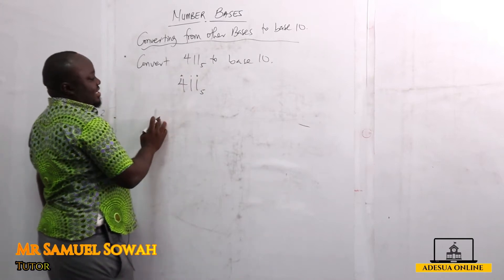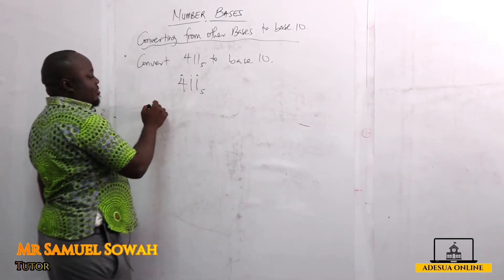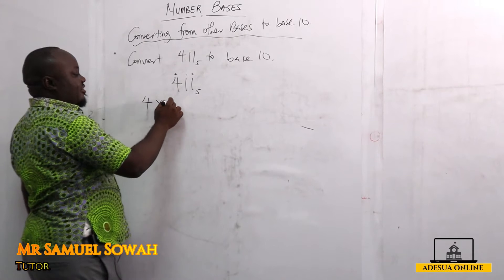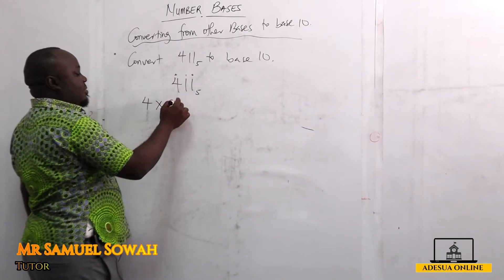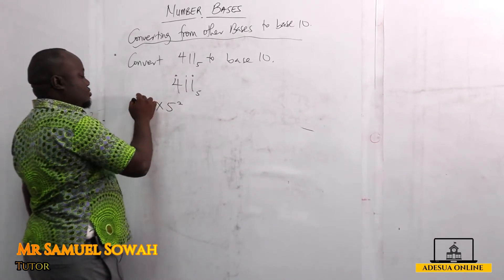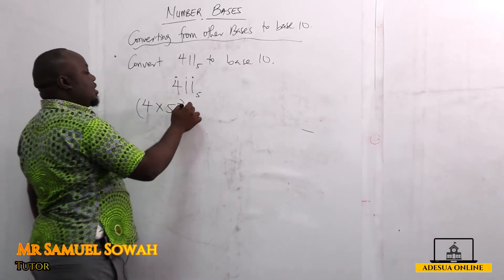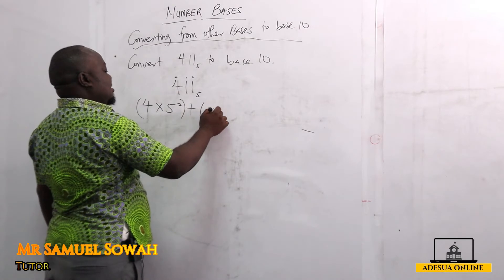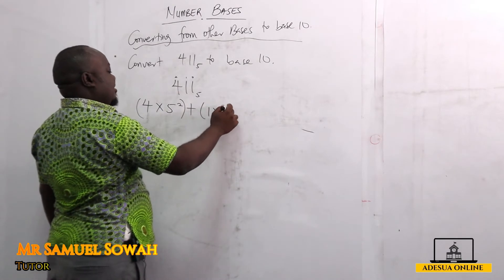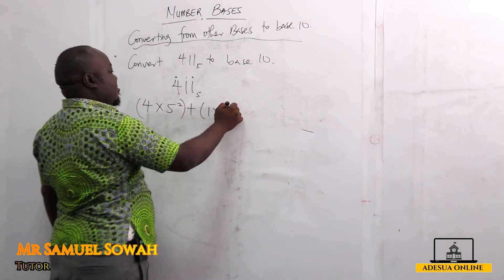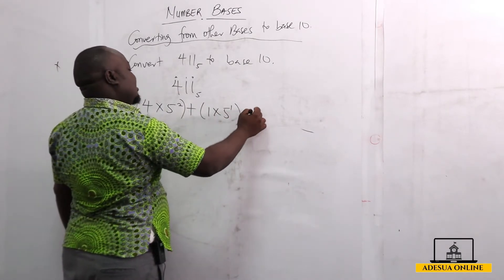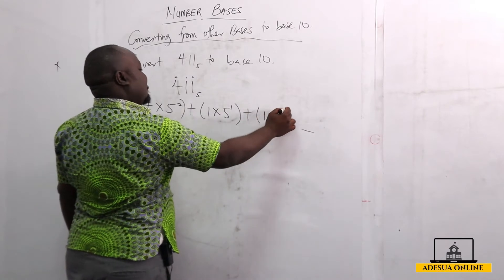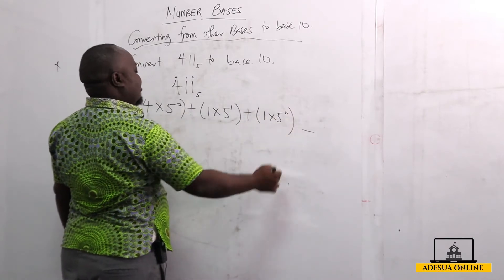This means we write it as 4 times 5 raised to the power 2, plus 1 times 5 raised to the power 1, and the last one is 1 times 5 raised to the power 0.